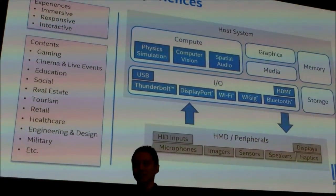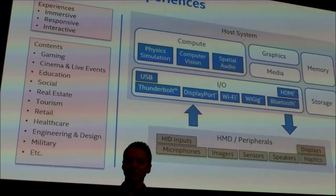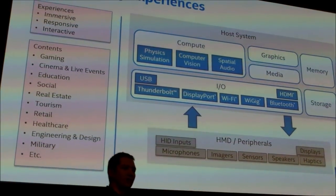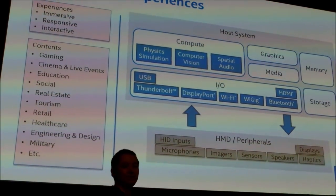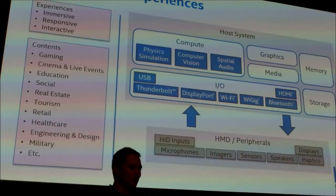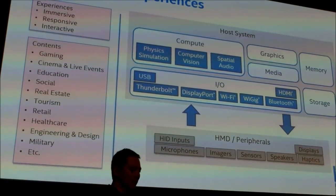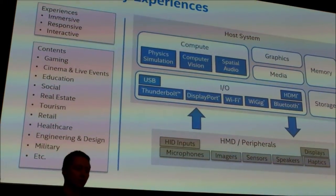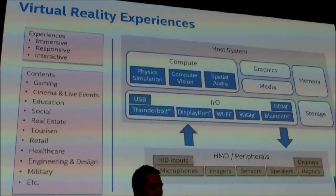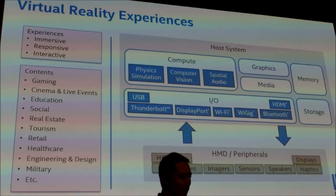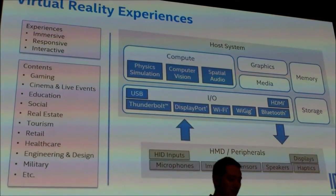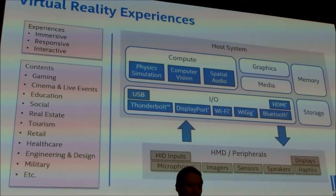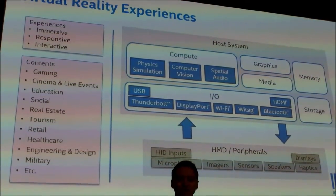Interactiveness is another area that's coming and can also push the bar in certain areas. For interactivity, natural interactions with your hands and so on — you may have additional cameras on your head-mounted displays, or peripherals that are looking towards you. This also requires some data to come into the system, and we have to understand what the compute need is based on that.